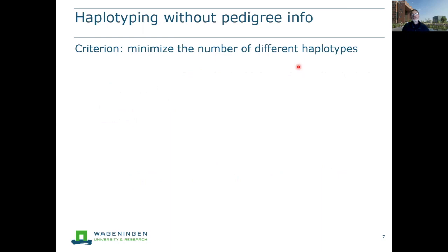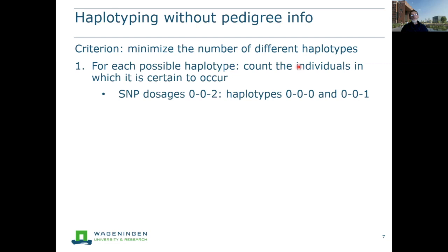If there's no pedigree information available, a criterion we can use — and the one we use in polyhaplotyper — is to minimize the number of different haplotypes used to explain all the individuals. For each possible haplotype, in our example with haploblocks consisting of three SNPs there are eight haplotypes, we count the individuals in which the haplotype is certain to occur.